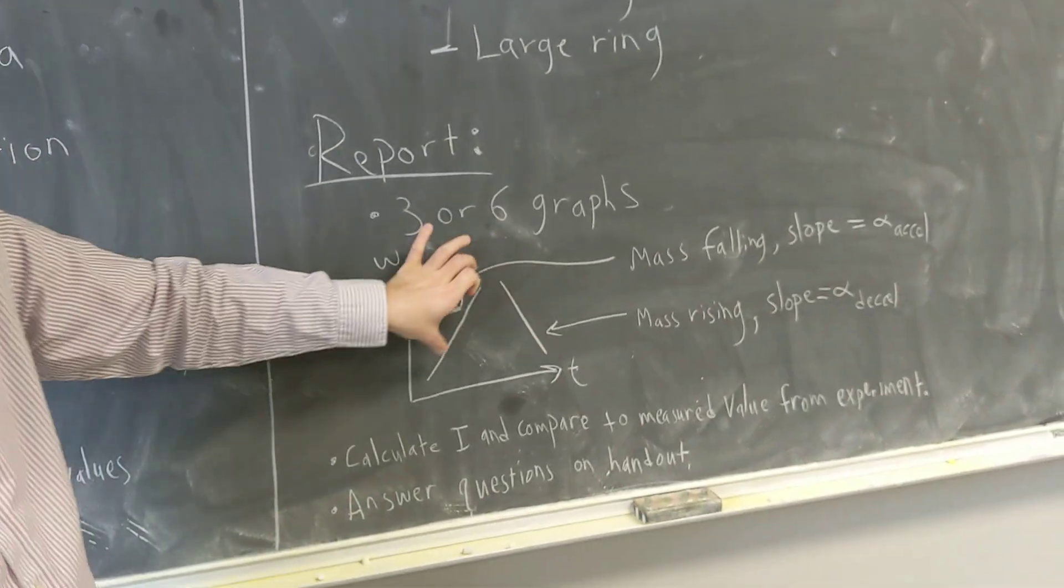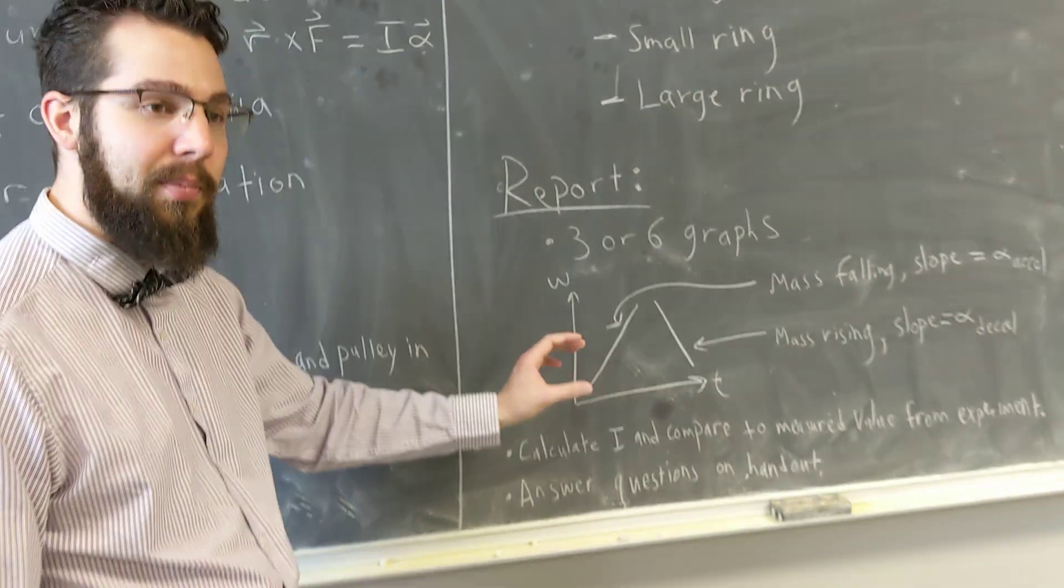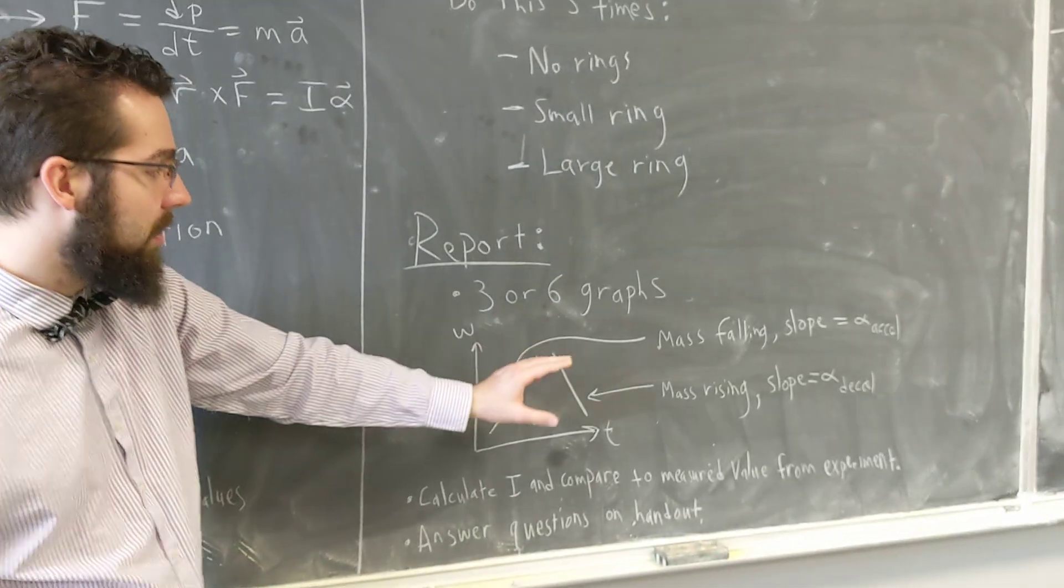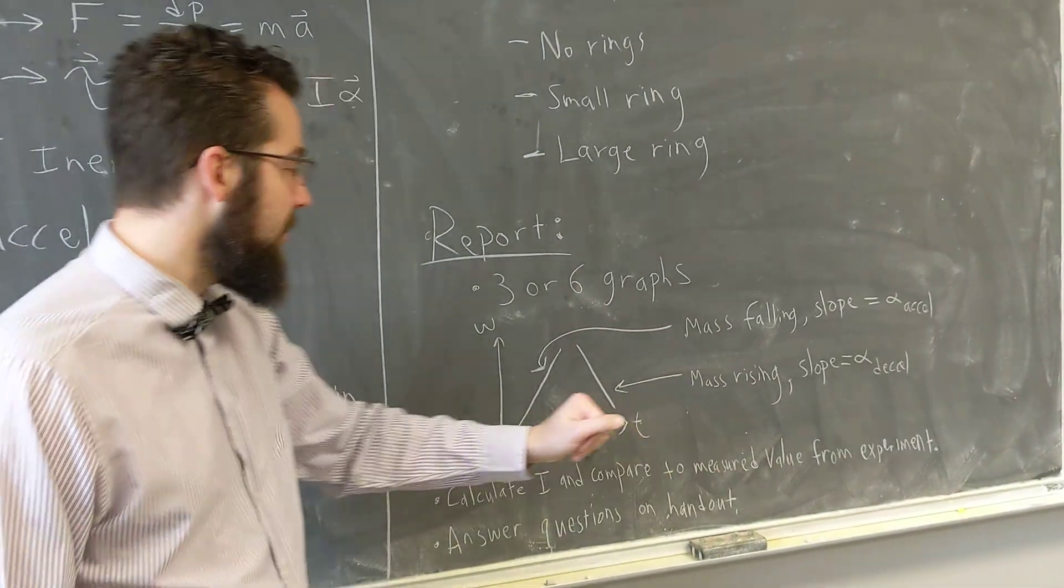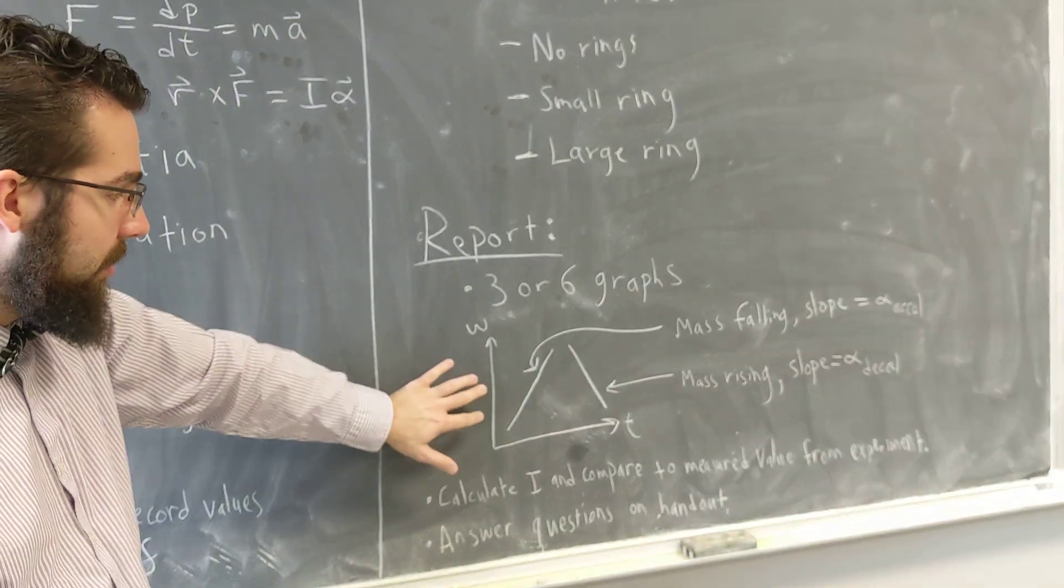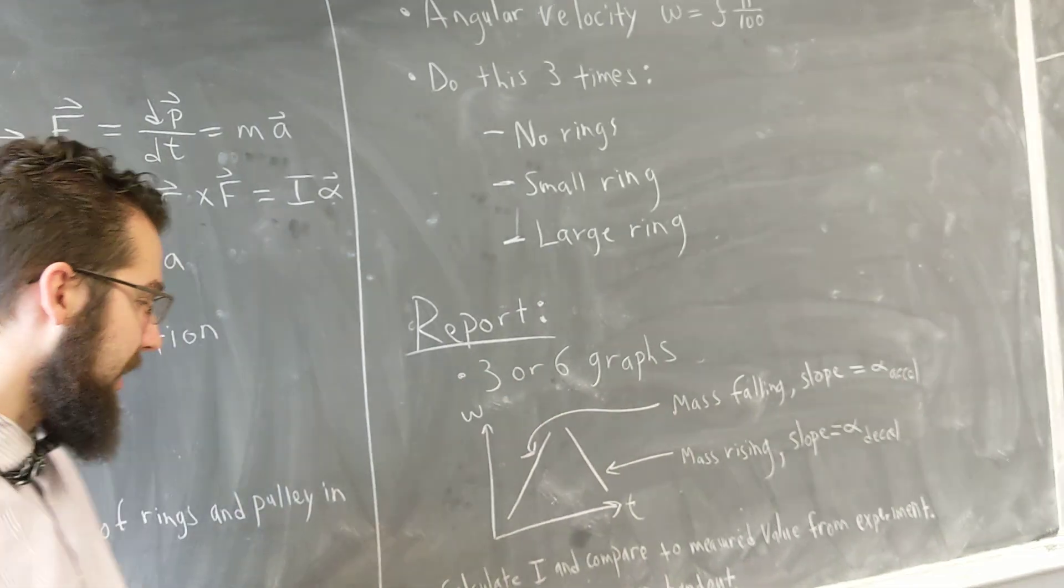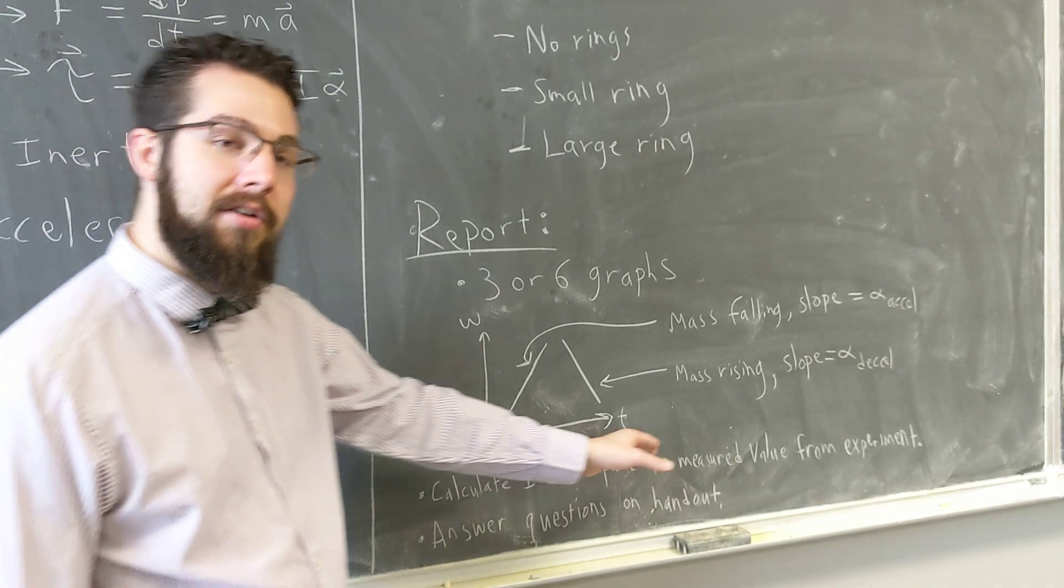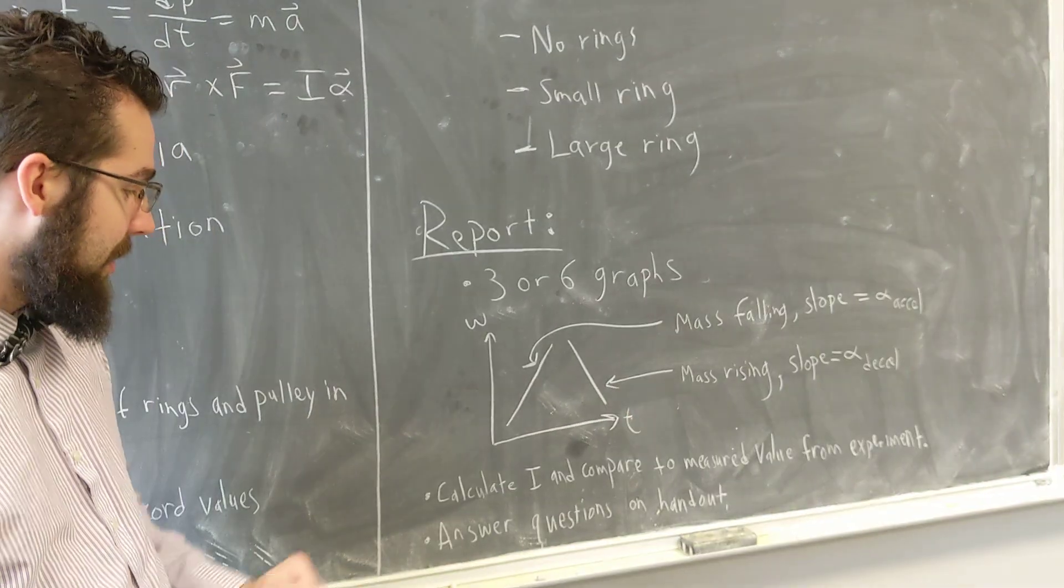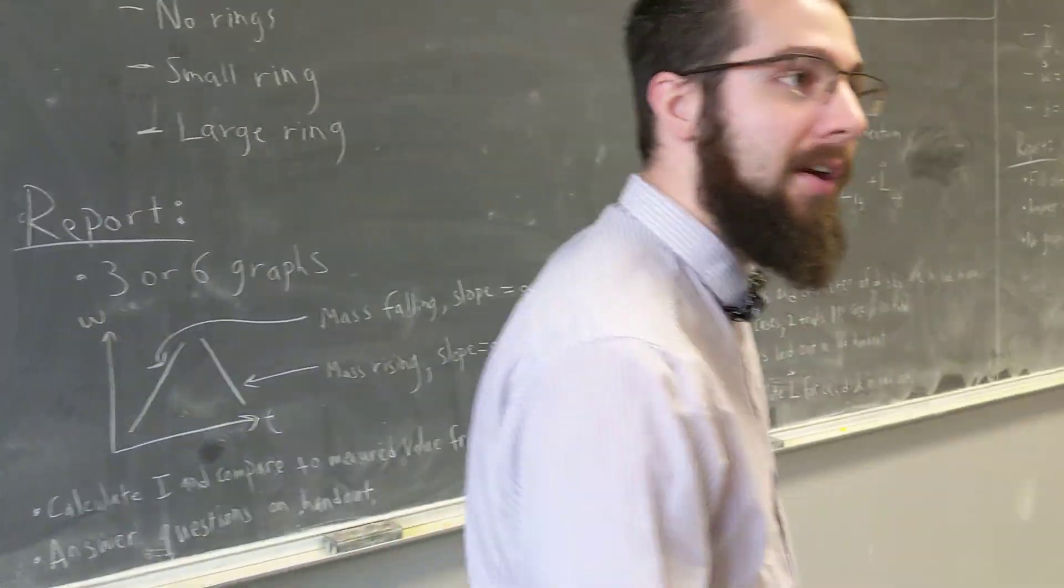We need the slope of each line separately. If you know how to use series in Excel, you can plot them both on one graph, but if that's too complicated you can do two graphs, one for acceleration and one for deceleration. You'll do those two graphs for each of these cases, which is where we get three or six. Then using our data, we'll calculate the moment of inertia I and compare it to the measured value. Then we'll answer some questions on the handout.